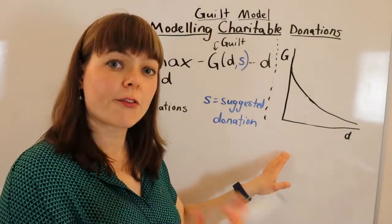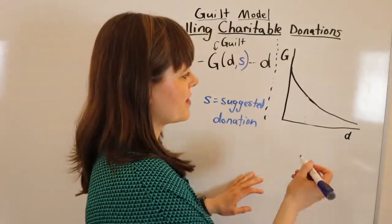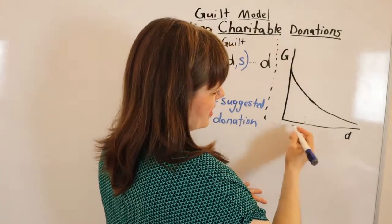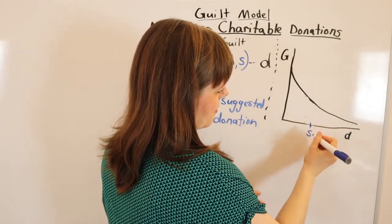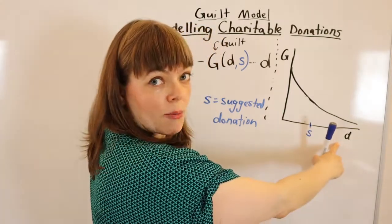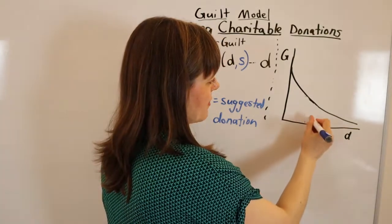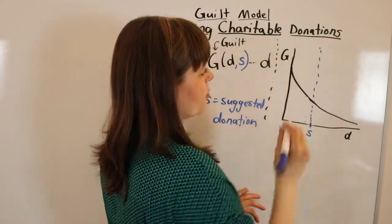Let's think about this. And there are, of course, a number of different ways of doing this. But a suggested donation is going to be a point at some point along this donation pathway. It is a version of how much you donate. And so I'm going to put a vertical line through there.